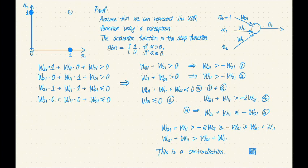That's it for this proof. It's basically a mathematical exercise, right? If we can represent this function, then the weights have to satisfy these inequalities. Well, turns out it's impossible for the weights to satisfy these inequalities. That's it.